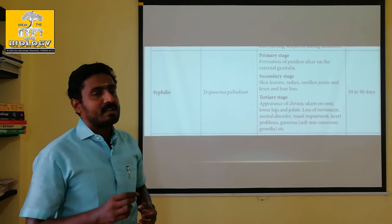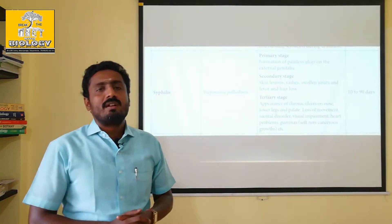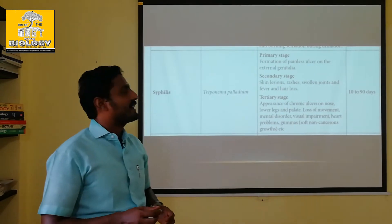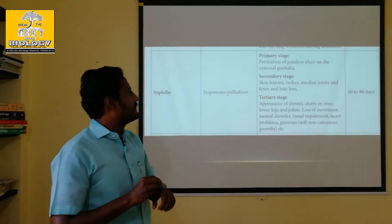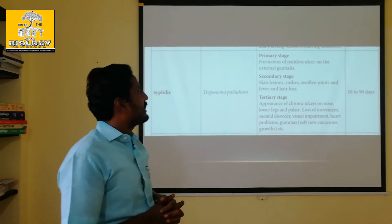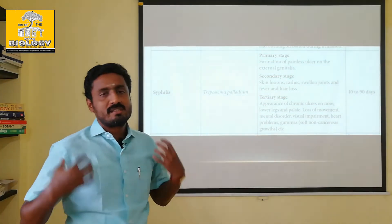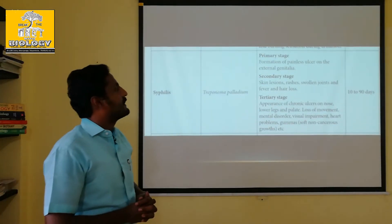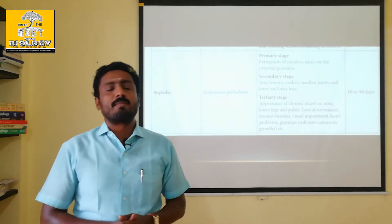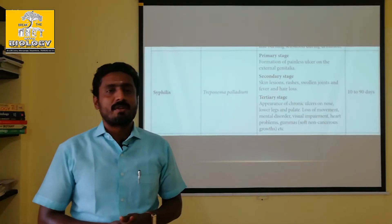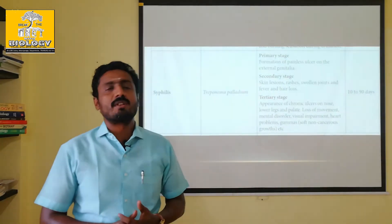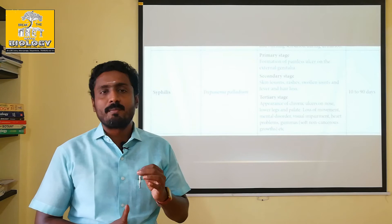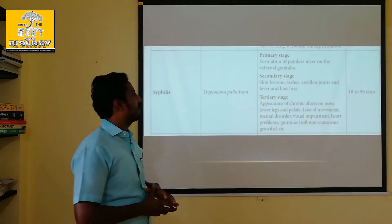In the secondary stage, there are skin lesions — rashes forming dead regions on the skin. There is also pain, swollen joints, fever, and hair loss. Fever is the first symptom when a pathogen enters the human body, as it indicates the immune system is working properly.